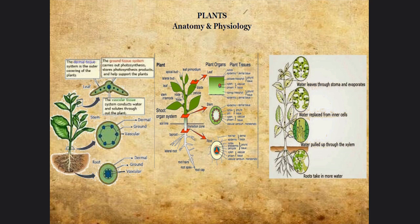As we mentioned earlier, the water is pulled up through the xylem from the roots, and it's replaced from the inner cells. The water then leaves through the stomata and evaporates, continuing the cycle — very simple but yet effective.